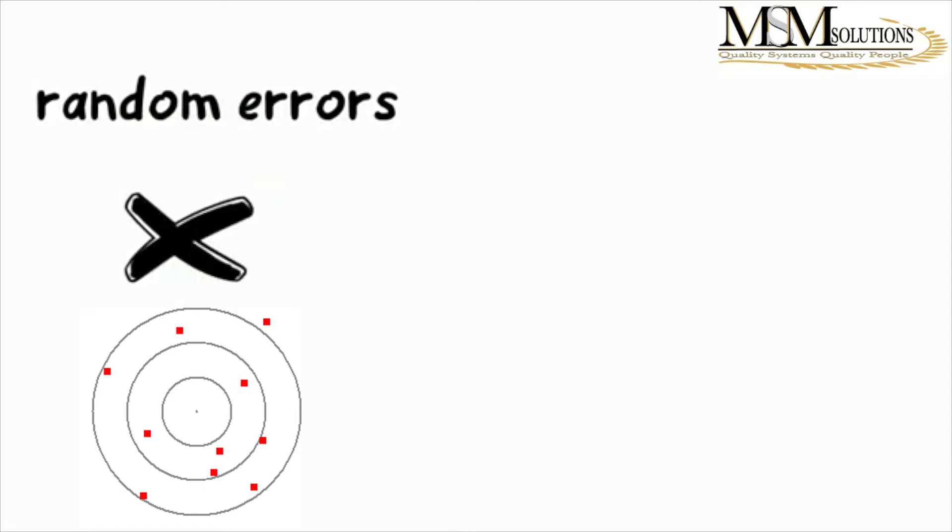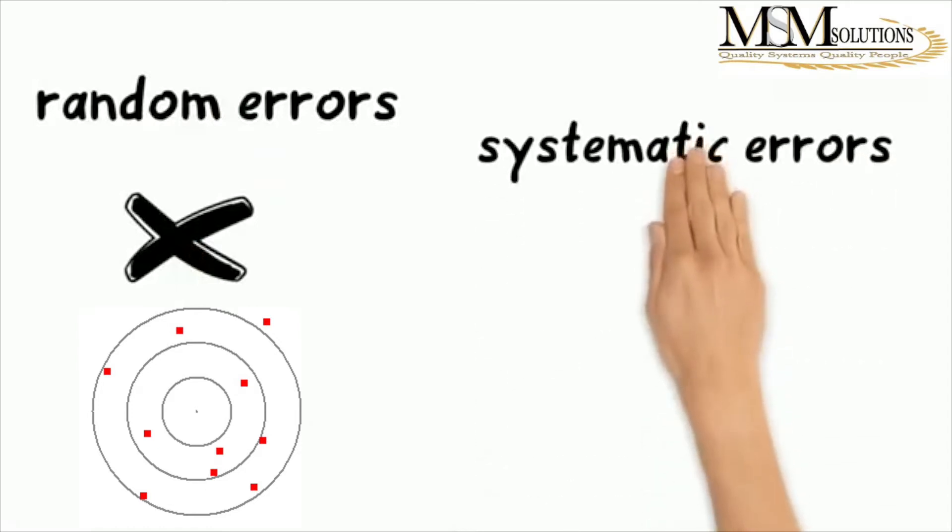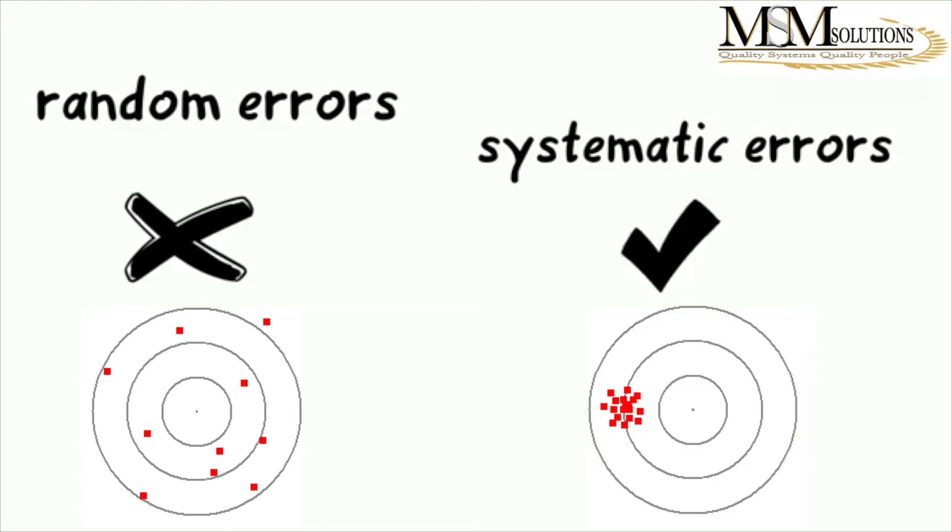Random errors are said to be unavoidable and can sometimes cluster around the true value. While systematic errors can be avoided, there are certain things you can do, such as calibrating your equipment to fix your systematic error.